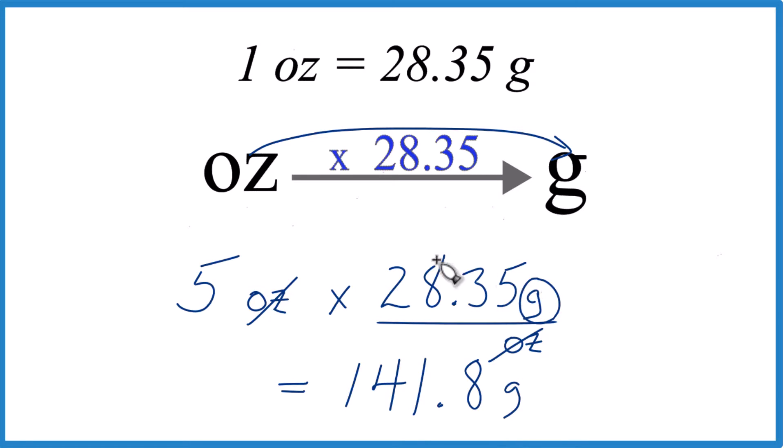So that's how you convert from 5 ounces to grams. You multiply by 28.35. Units cancel out. You're left with 141.8 grams.